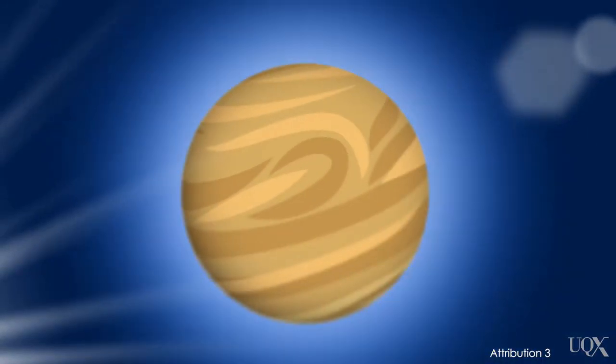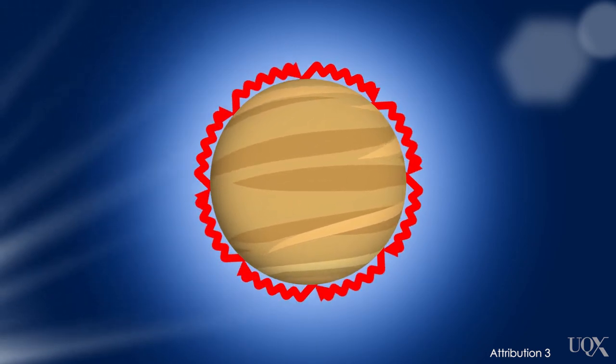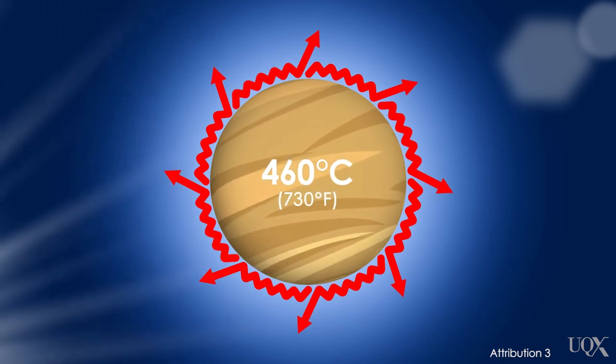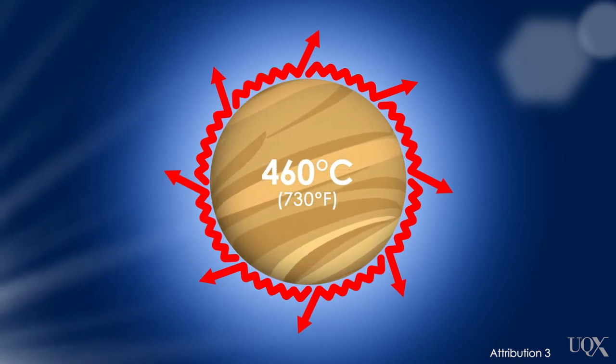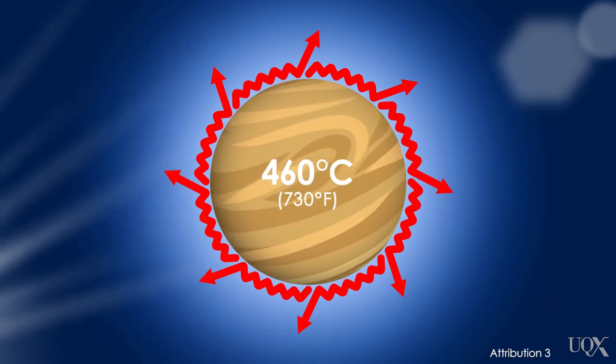At the other extreme, Venus has a runaway greenhouse effect much bigger than the greenhouse effect on Earth. Its temperature is an intense 460 degrees Celsius or 730 degrees Fahrenheit. It's like this day and night all year long. Venus doesn't even have seasons because the greenhouse effect is so strong.